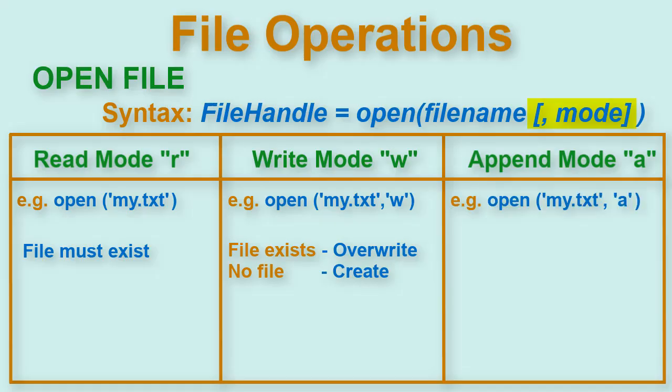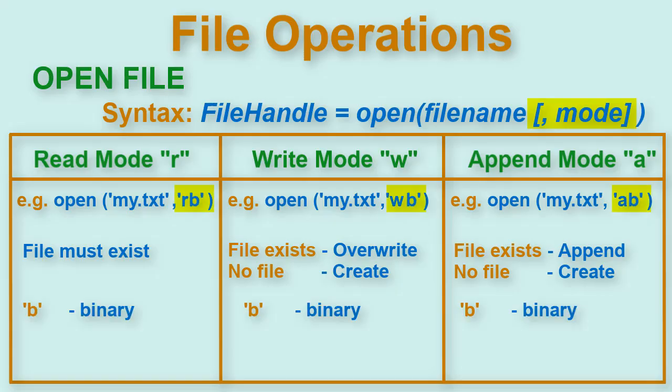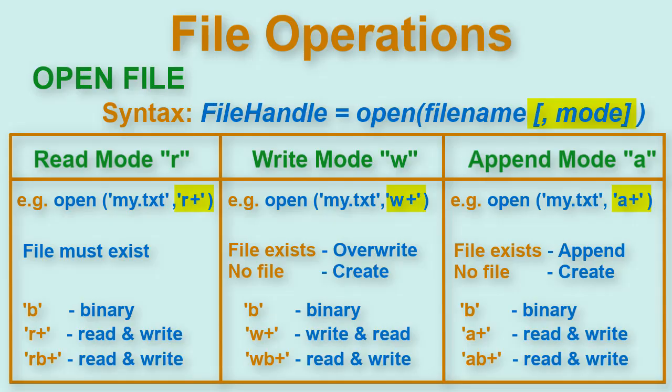Next type of mode is A which is for append. This is another form of write mode but here if the file exists then the data being written is appended to the end. Now in all of these modes if you put B then the file is opened in binary mode.